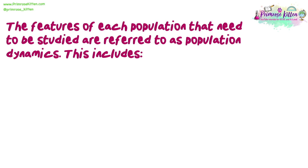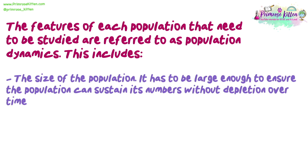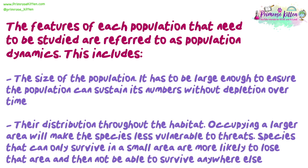The features of each population that need to be studied are referred to as population dynamics. This includes the size of the population — it has to be large enough to ensure the population can sustain its numbers without depletion over time. Also, the distribution throughout the habitat: occupying a larger area will make the species less vulnerable to threats. Species that can only survive in a small area are more likely to lose that area and not be able to survive anywhere else.